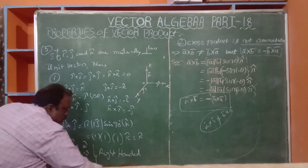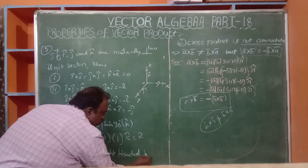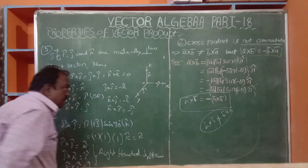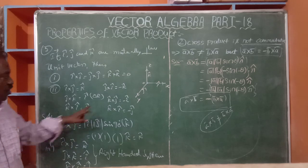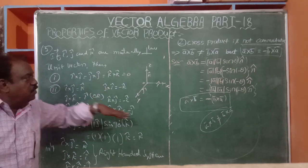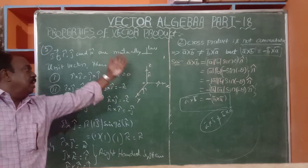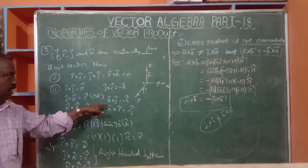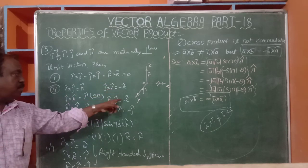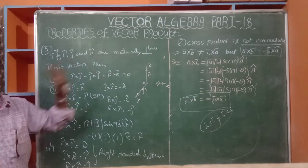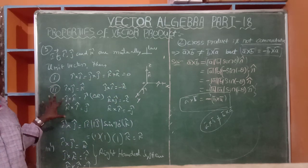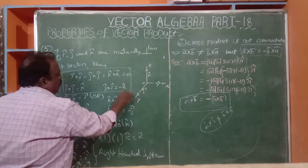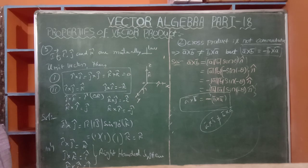This is the right-handed system. The left-handed system reverses the order: j to i, i to k, k to j. In the left-handed system we get negative values. So j cross i = −k, k cross j = −i, and i cross k = −j, by using the second property (A-bar cross B-bar = −B-bar cross A-bar).